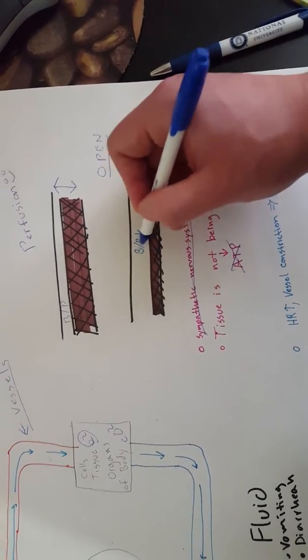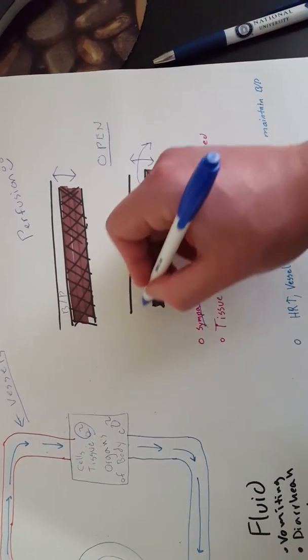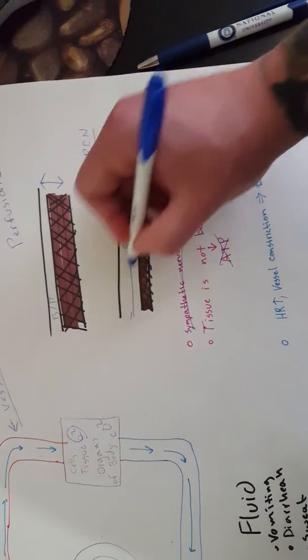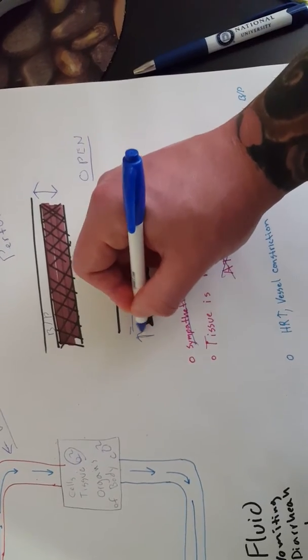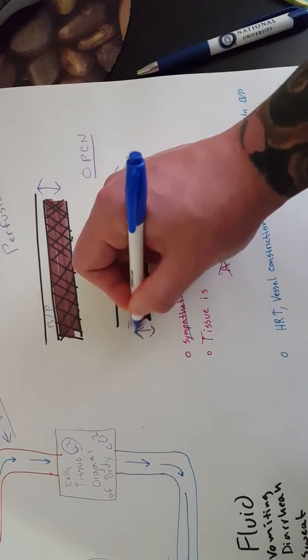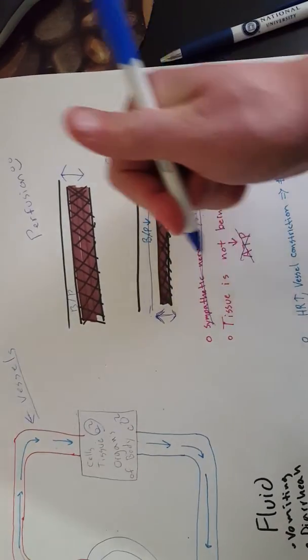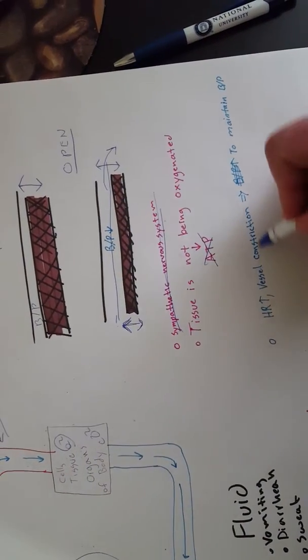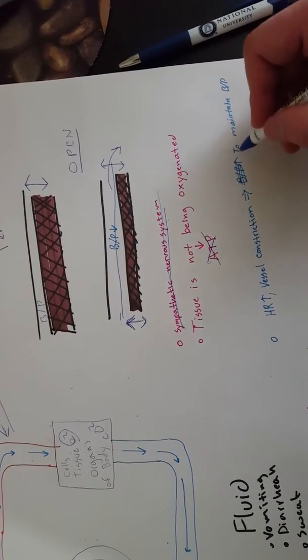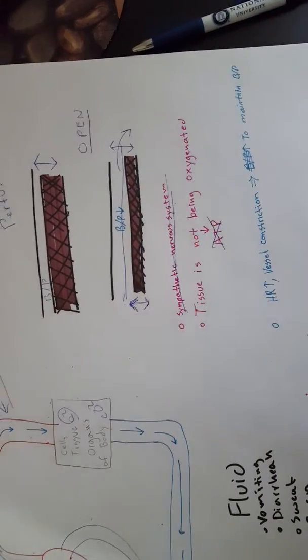If it constricts your vessels, let's say your vessels are about this big and the circumference goes down, that pressure is going to go back up. By your vessels constricting, it's trying to maintain that blood pressure. It's still going to go down, still going to be pretty low, but it's trying to maintain it.